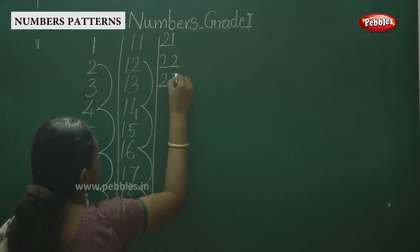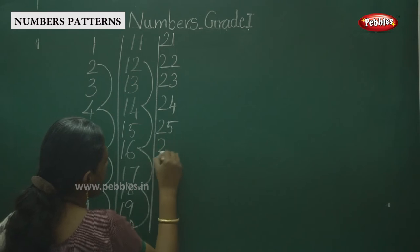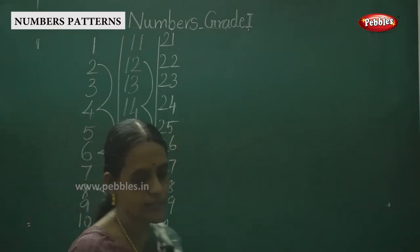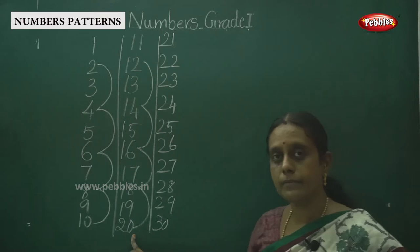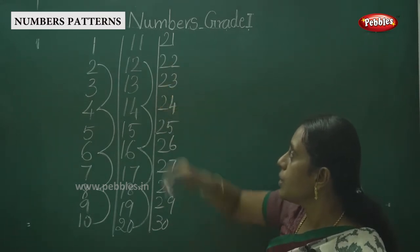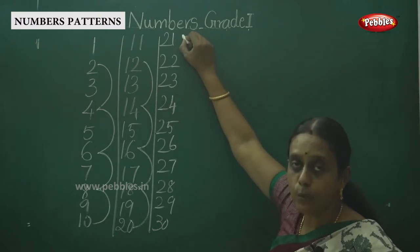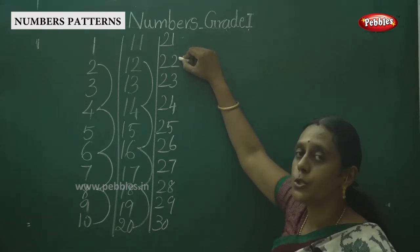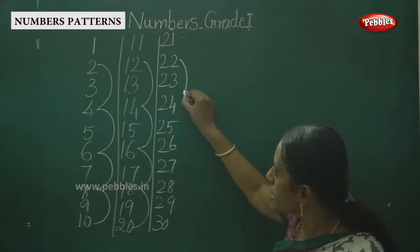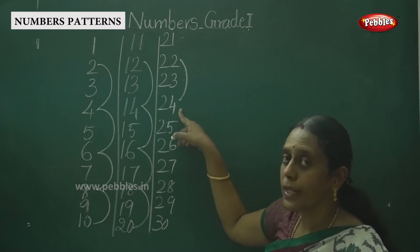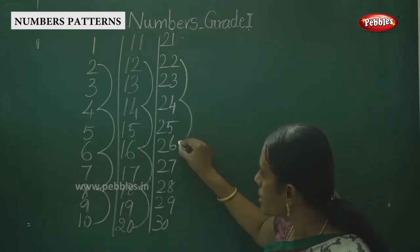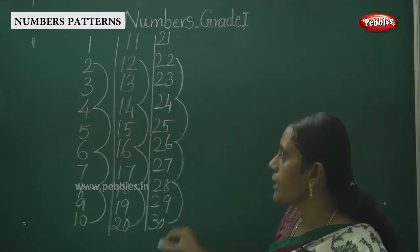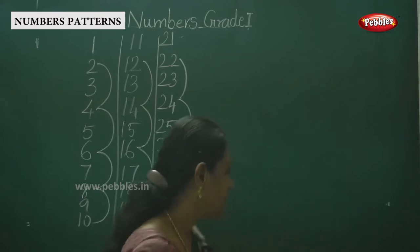Continuing from 20, we write 21, 22, 23, 24, 25, 26, 27, 28, 29, 30. Now listen — we stopped at 20, so skip the number 21 and say 22. Next, skip 23 and say 24, skip 25 and say 26, skip 27 and say 28, and then 30.